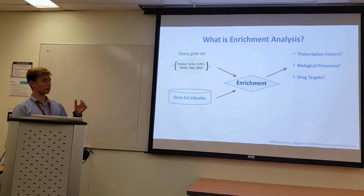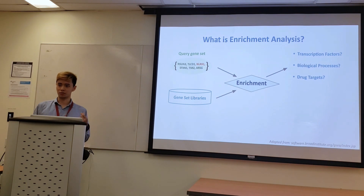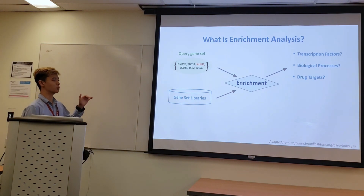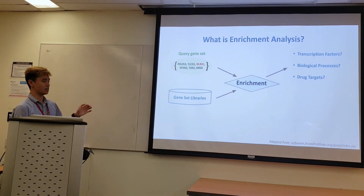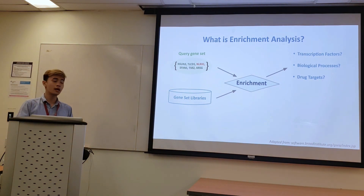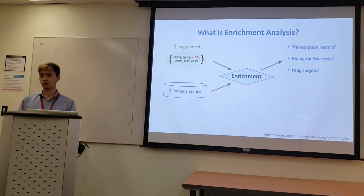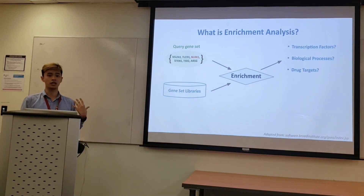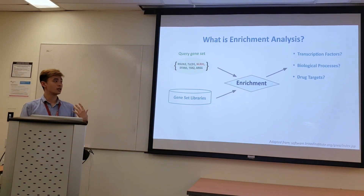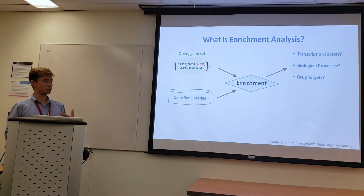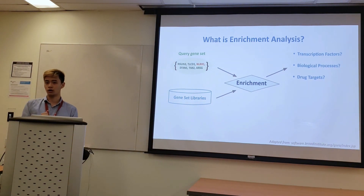Enrichment is an algorithm that suggests themes that might be relevant to a set of genes. Gene sets are commonly made in biology — for example, they might be the genes differentially expressed in a cancer cell versus a healthy cell. What enrichment does is identify gene sets in an annotated library that are most similar to the input, and then return their annotations as suggested themes that might also be relevant to the input. Depending on the library, this could be transcription factors that affect many of its members, biological processes some are related to, or drugs whose signatures resemble it. Creating a good enrichment algorithm is important because if we can improve the quality of the suggestions, this could really help expedite biological discoveries.